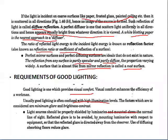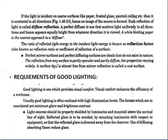The factors considered for good lighting are minimum glare and brightness contrast. Good lighting must have minimum glare and brightness contrast. Light sources should be properly shielded by luminaires and mounted to reflect light above the normal line of sight. Reflected glare is to be avoided by mounting luminaires with respect to equipment so that reflected glare is directed away from the observer. Use of diffusing absorbing fixtures reduces glare.